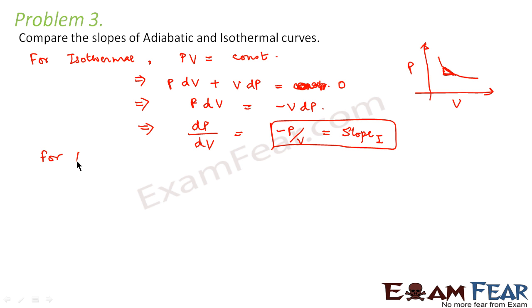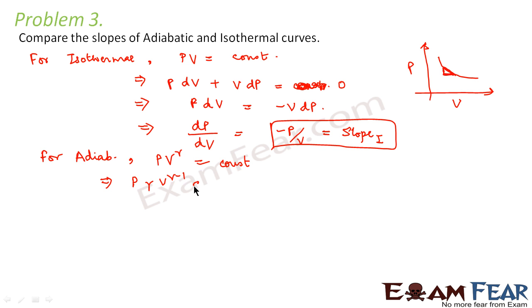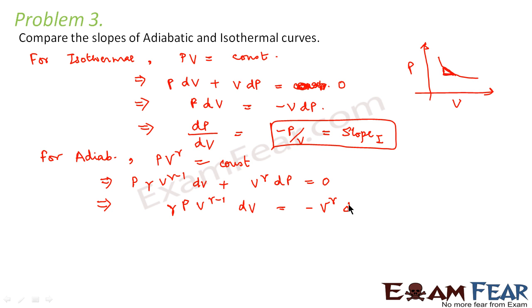Now let us talk of the adiabatic process. In an adiabatic process the equation becomes PV^γ = constant. Differentiating: P·γ·V^(γ−1)·dV + V^γ·dP = 0, which gives γ·P·V^(γ−1)·dV = −V^γ·dP.